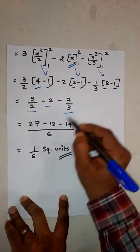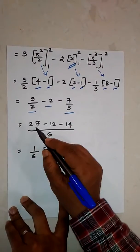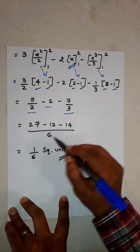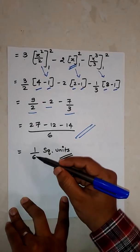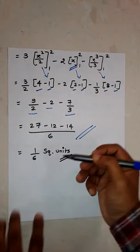So LCM, 27 minus 12 minus 14 upon 6. Final answer: 1 upon 6 square units. Thank you.